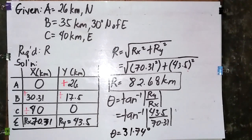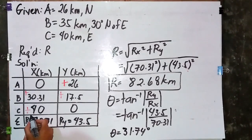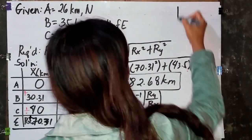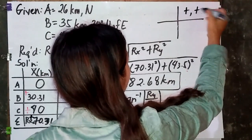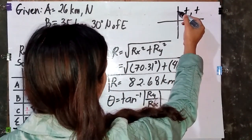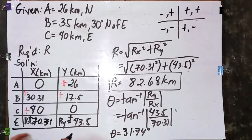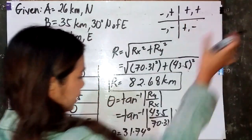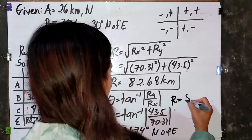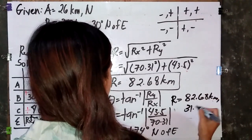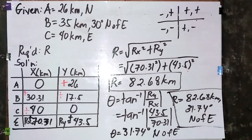We can also identify the direction using the signs of Rx and Ry. Since both Rx and Ry are positive, they lie in the first quadrant — quadrant 1 is positive-positive, quadrant 2 is positive-negative, quadrant 3 is negative-negative, and quadrant 4 is positive-negative. Since both are positive, it is in the first quadrant, meaning the direction is north of east. Our final resultant is 82.68 kilometers at 31.74 degrees north of east. That's the end of our component method.